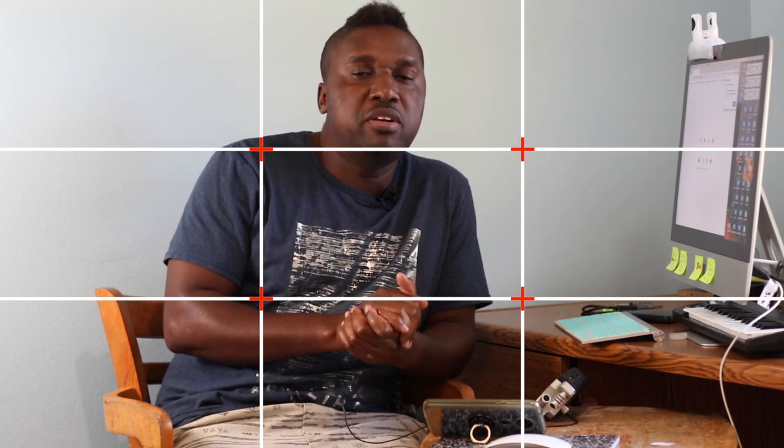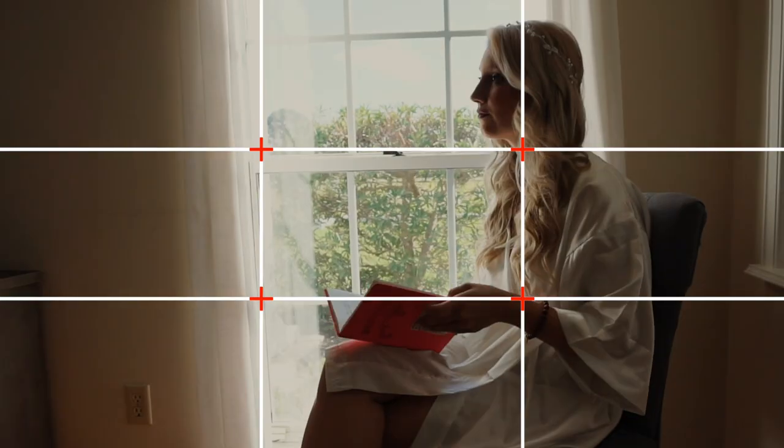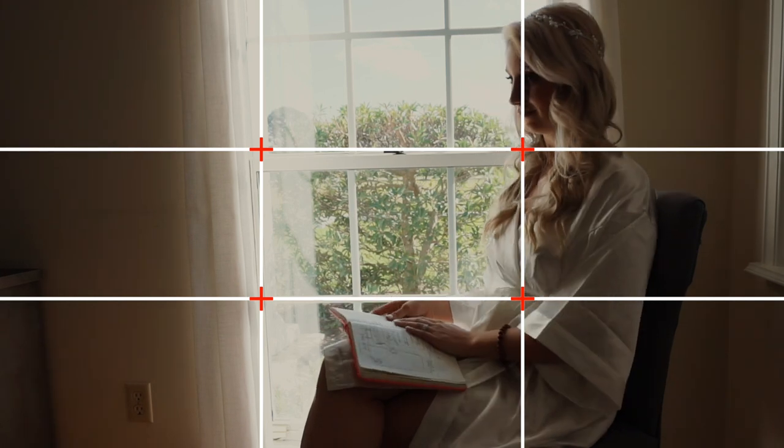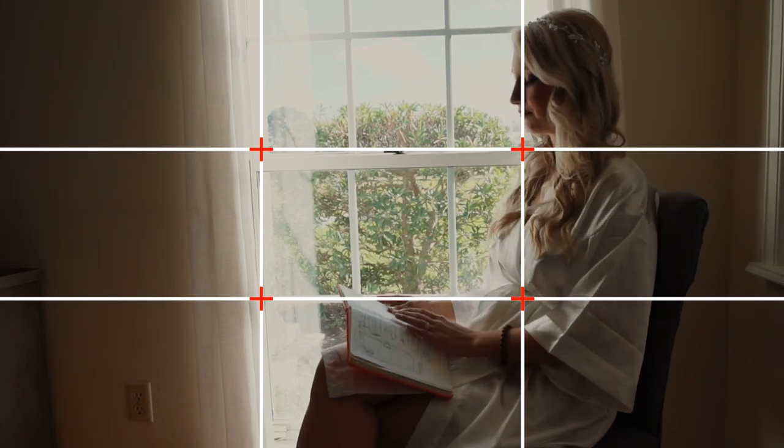When you divide the frame, you're going to have four cross points. A lot of cameras, like the Canon 7D that I'm using right now, have a grid on them. The grid divides the frame into nine squares, which helps out a lot especially if you're a beginner. It helps with your composition to place your subjects on those cross points. That's what the rule of thirds is.